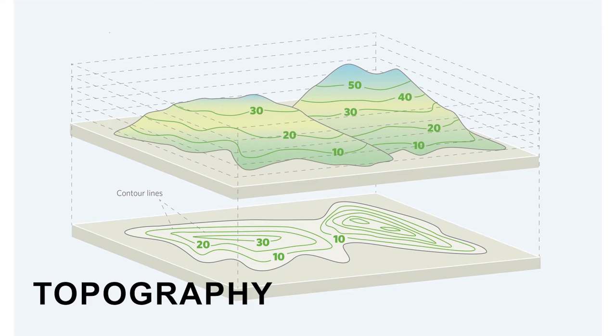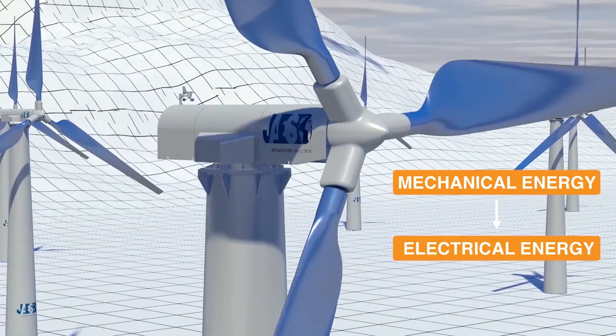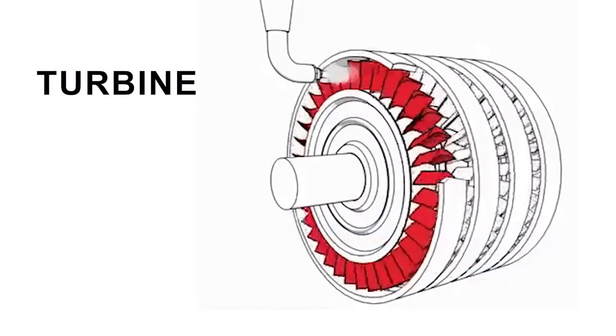A dynamo is a machine that converts mechanical into electrical energy. A turbine is a machine for producing power in which a wheel or rotor containing vanes is made to spin using a fluid.